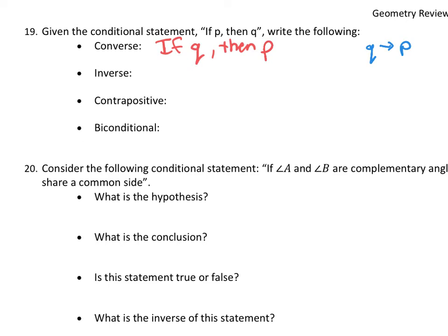The inverse negates both parts — you put the word 'not' in. So: if not-p, then not-q. The way we did that in shorthand was the squiggly line, which means 'not': not-p implies not-q.